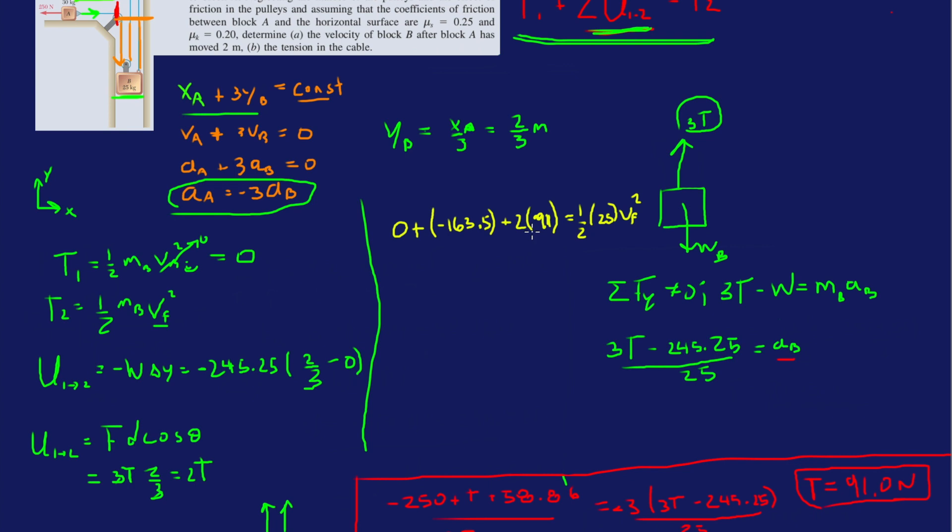Nice, so we're almost there. 163.5 plus 2 times 91, got it, times 2 divided by 25. Take the square root of that, and then you get velocity of B after A has moved 2 meters. It's 1.22 meters per second. And that's your final answer.